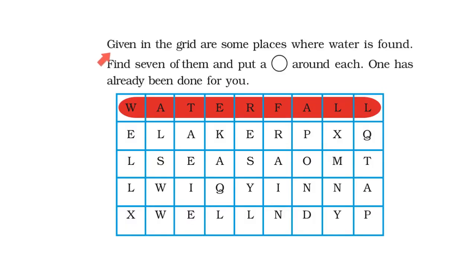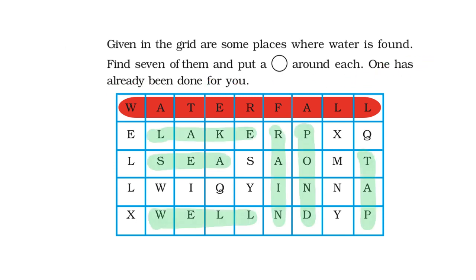Given in the grid are some places where water is found. Find seven of them and put a circle around each. One has already been done for you. We can find lake, sea, well, rain, pond and tap. We get water from these.